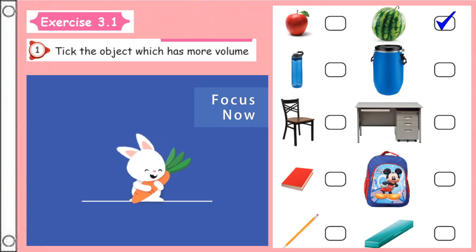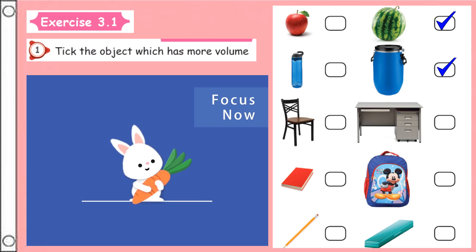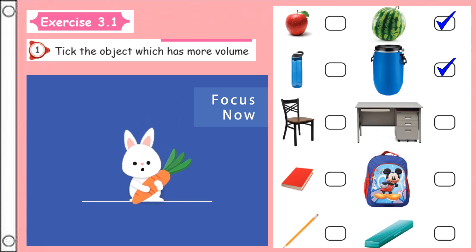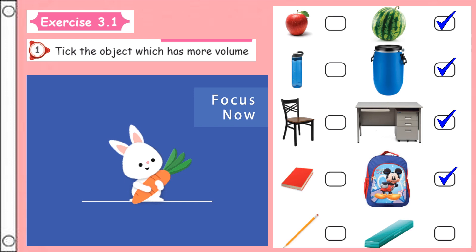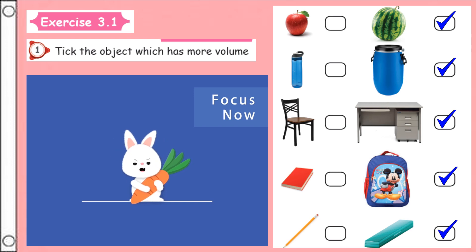Put a tick on watermelon. And then water bottle or water drum — yes, sure, it is the drum only, put a tick. Then chair or table — right side, table only. Then book or bag — sure, it is a bag only. Then pencil or pencil box — very good, pencil box only. These are all very easy for you, just put a tick in your book.